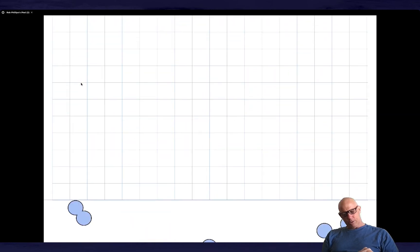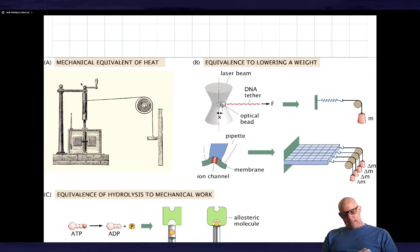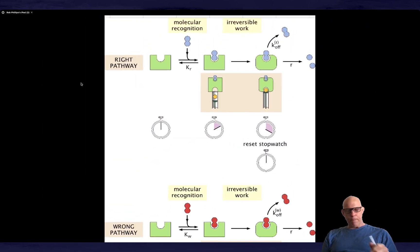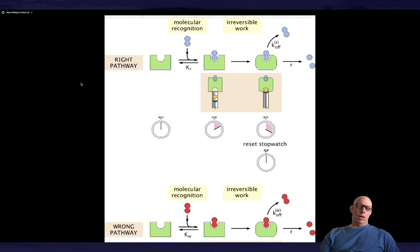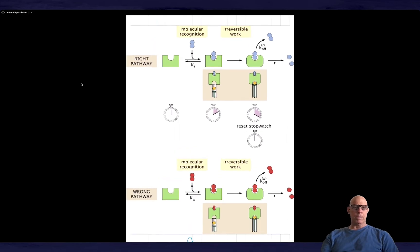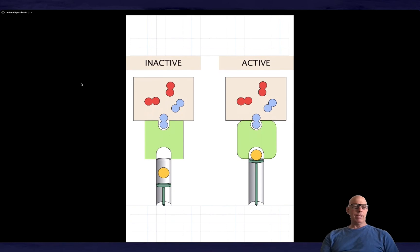So maybe I should just try to recap. So conceptually, what I was claiming is that the idea is that by doing work on the system, we get a chance for a second pass at discrimination. So that's the first point I was making. We used the concept of an allosteric transition to make the point.